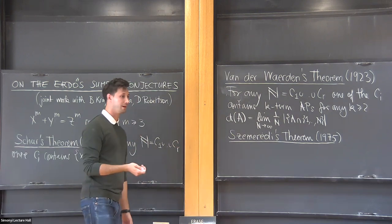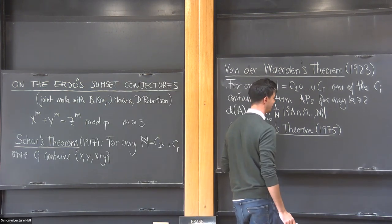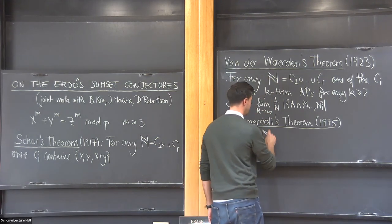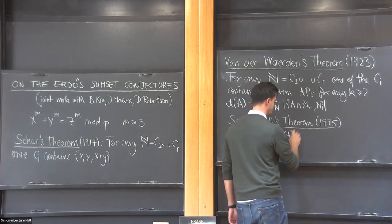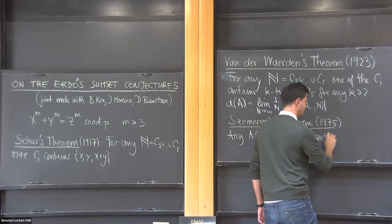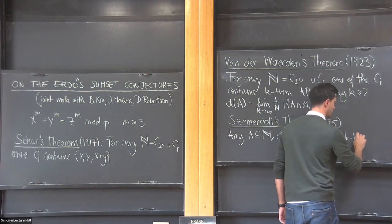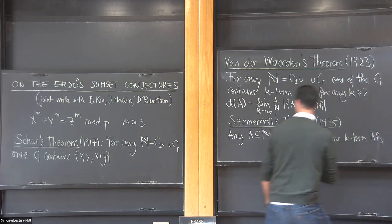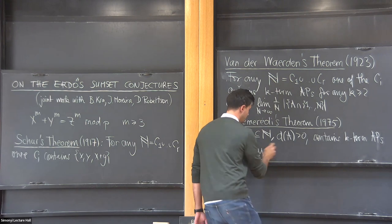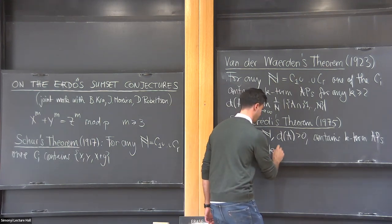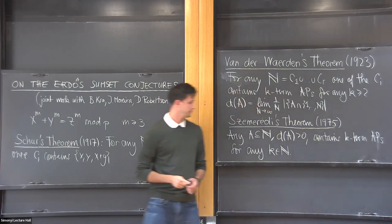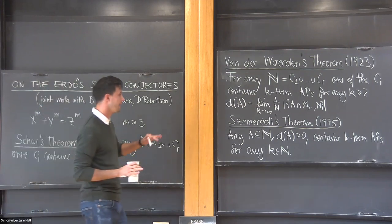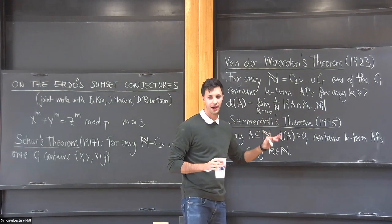So the conjecture of Turán and Erdős was: any set with positive density contains arbitrarily long arithmetic progressions. That was proved by Szemerédi in 1975. Any subset of integers with positive density contains k-term arithmetic progressions. So this gives you a little bit more—arithmetic progressions of arbitrarily long length.